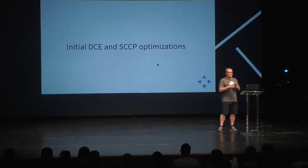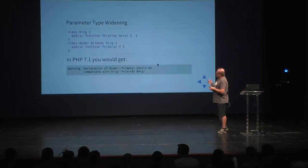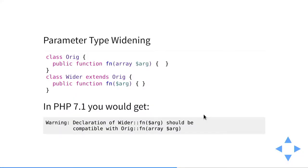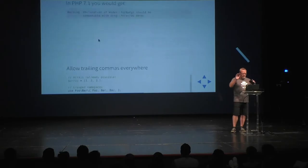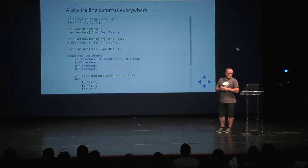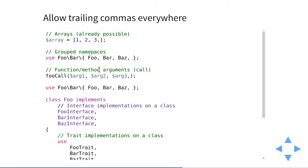One of the things we've started working on is DCE — dead code elimination — and SCCP, sparse conditional constant propagation. Other features: parameter type widening, which means you can widen the type in a child class when extending the parent. The function signature doesn't have to exactly match; it has to be compatible — you can't restrict it, but you can widen and allow more things as long as it's still compatible. Trailing commas are also now allowed everywhere.